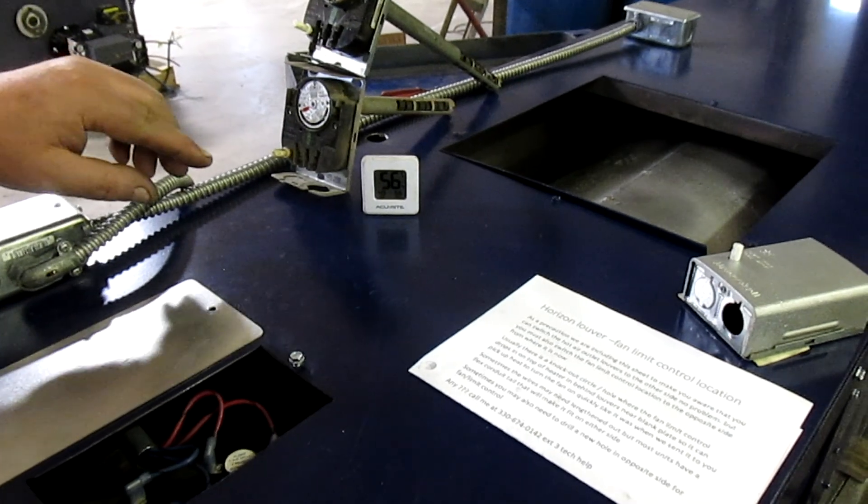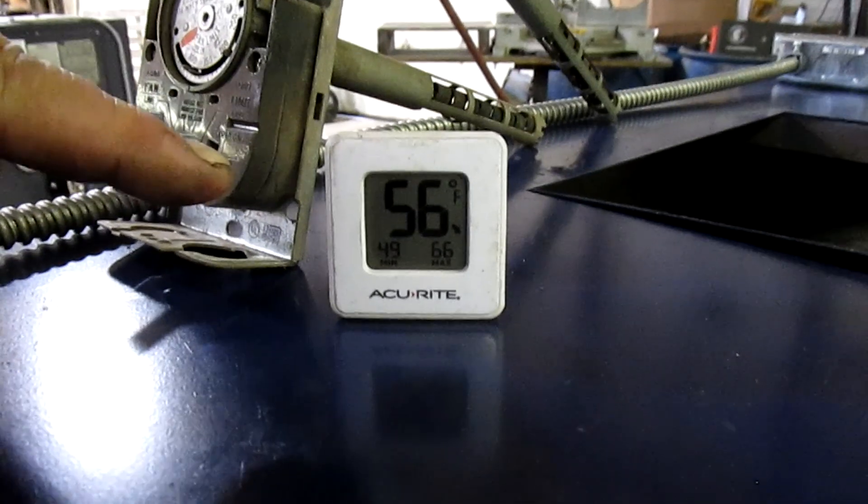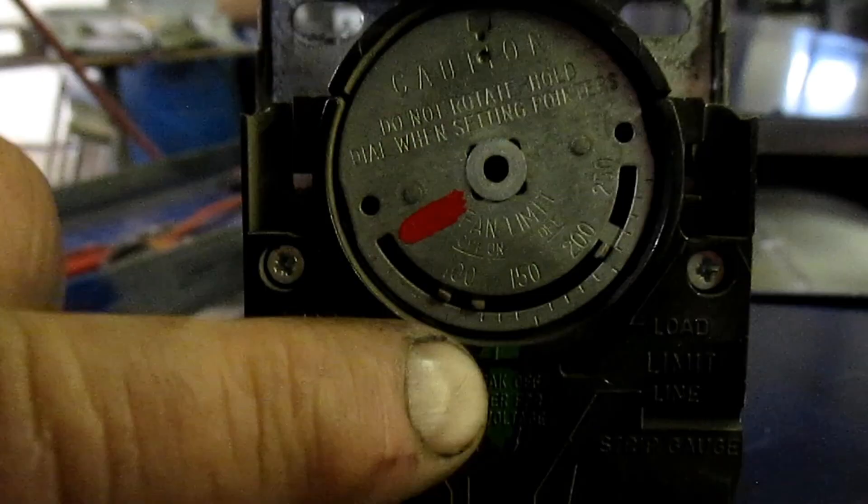Now let's take a look here, how we do this Triple Watchdog System and why we do it. Notice the temperature in the shop is 56 degrees. Here's an original fan limit control that's way too warm, and right here is the calibration line.